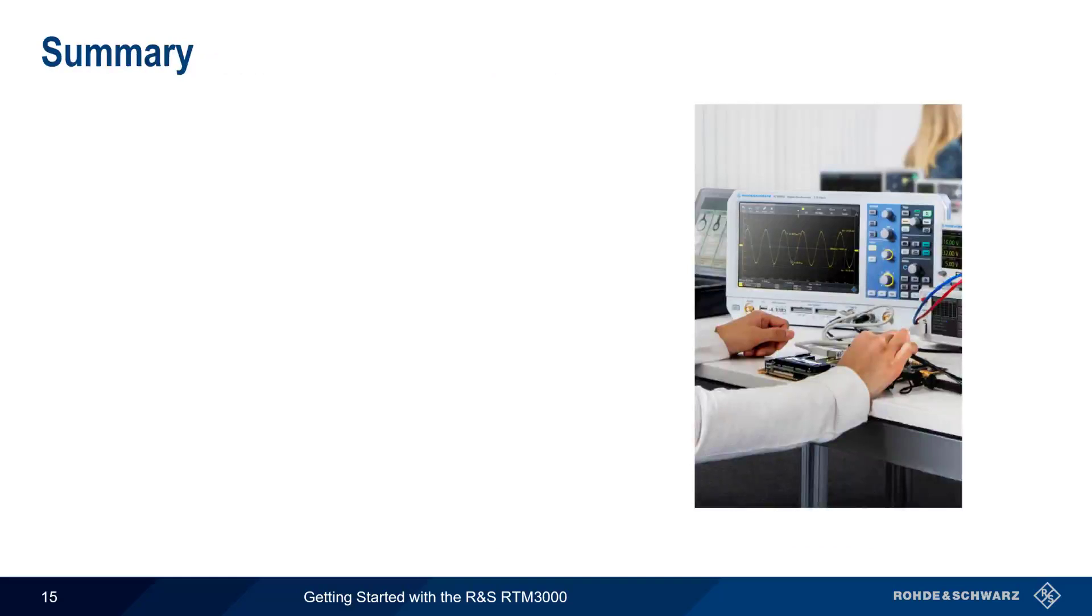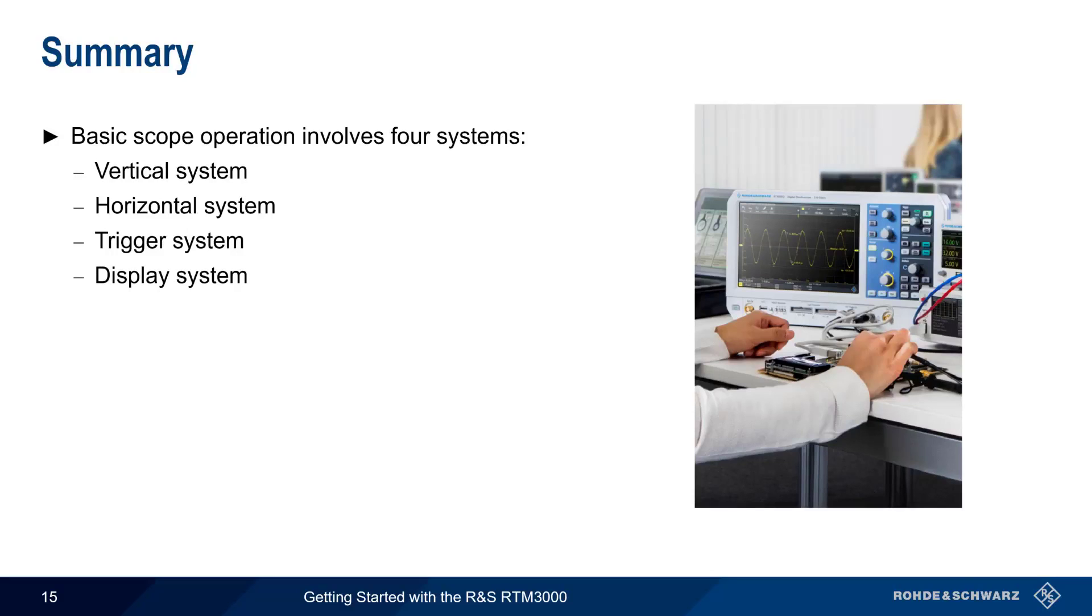Let's summarize what we've covered. Basic oscilloscope operation involves the configuration of four systems: the vertical system, the horizontal system, the trigger system, and the display system. A good starting point for many scope measurements is a preset and/or an autoset, but be sure to remember the difference between them.